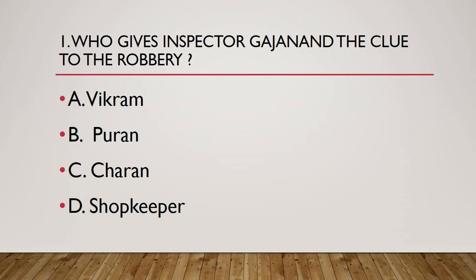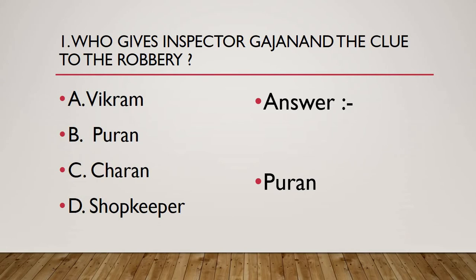Puran was the cook in Charan's house and he was the one to give the clue by showing the three dogs. So Puran is the correct answer. Please repeat: Puran gives Inspector Gajanan the clue to the robbery. If you keep repeating this, you will remember the sentences and be able to answer in any form.